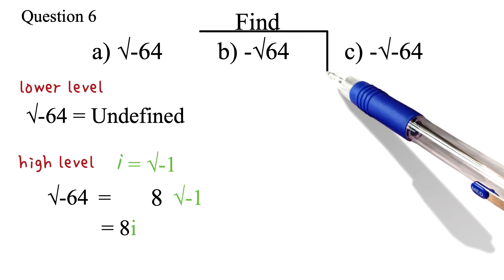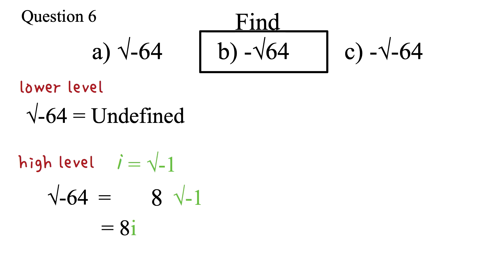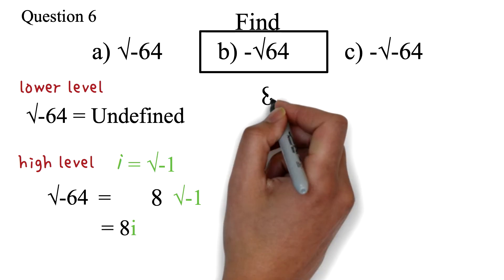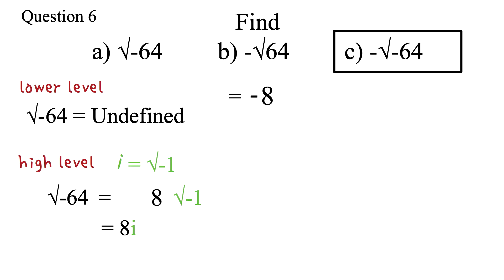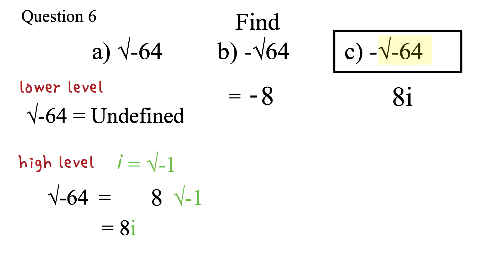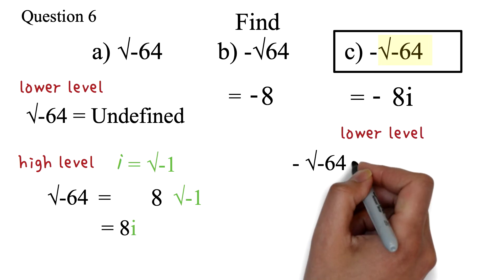For 6b: the negative square root of 64. Some students get confused about this. Here, the negative is not under the root sign. All we need to do is find the square root of 64, which is 8, then bring our negative sign down. So we have negative 8 as our answer. For 6c: the negative square root of negative 64. This is just a combination of 6a and 6b. We solve the square root of negative 64 to get 8i, then bring the negative down to get negative 8i. Please note: if you have not been introduced to the square root of negative 1, then 6c should be answered as undefined.